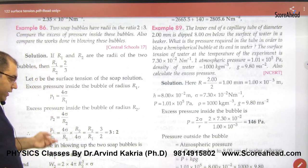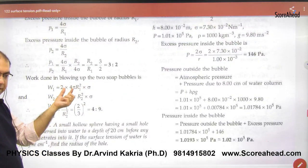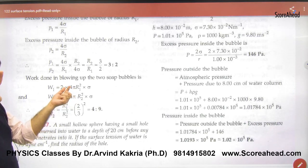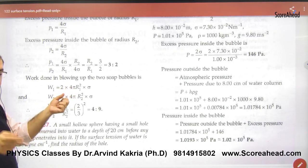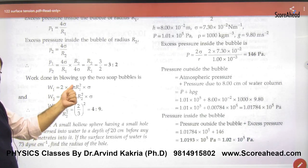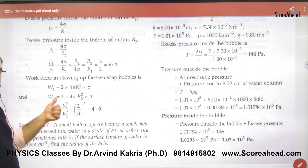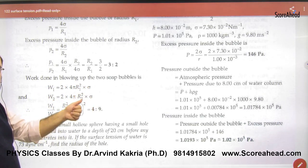So how does work done work? σ into change in area. There is a bubble, we have to double the area, inside and outside. So 2 into 4πR1 square into σ. First work done. 2 into 4πR2 square into σ. Second work done.